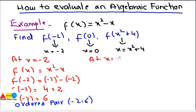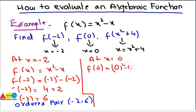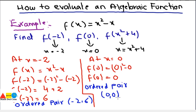Next, we find f(0) by replacing x with 0 at all places: 0² - 0 = 0. So f(0) = 0, and the ordered pair is (0, 0). I'm writing the ordered pairs for clarity so you can see the connection between the algebraic function and its ordered pairs, as discussed in the previous lecture.